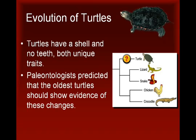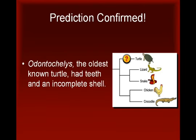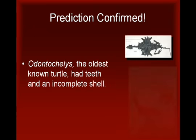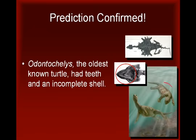Paleontologists predicted that the oldest turtles should show evidence of these changes. This prediction was confirmed by the discovery of the fossil remains of the oldest known turtle in deposits from China. Three specimens of this species, named Odontochelys, were fossilized in rocks dating back to 220 million years ago. Just as predicted, this intermediate form had a full set of teeth and no beak. Also as predicted, it had a complete lower shell and an incomplete upper shell made from broadened ribs and backbone. This evidence confirms the hypothesis that the lower shell evolved first, followed later by the upper shell.